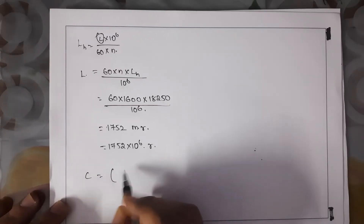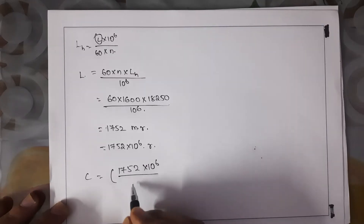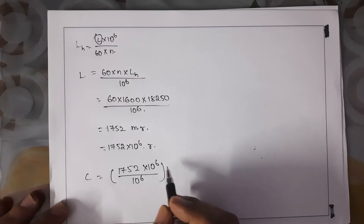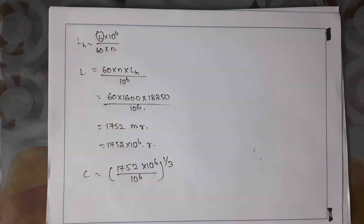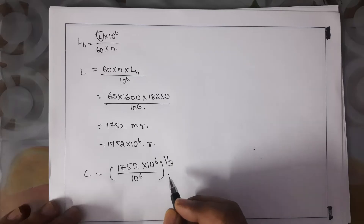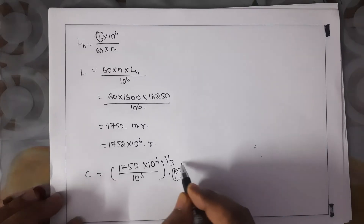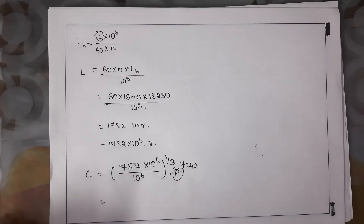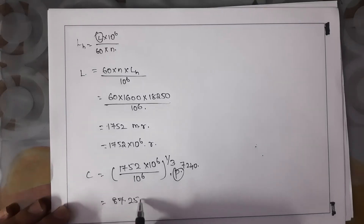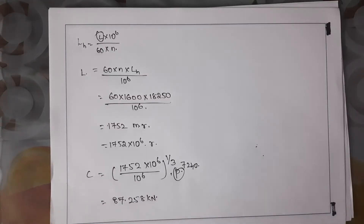Now we calculate the dynamic capacity: C = (1752 × 10^6 / 10^6)^(1/3) × P = (1752)^(1/3) × 7240. I got an answer of C = 87.25 kilo-Newtons. We need to select a bearing number that satisfies this dynamic load capacity.